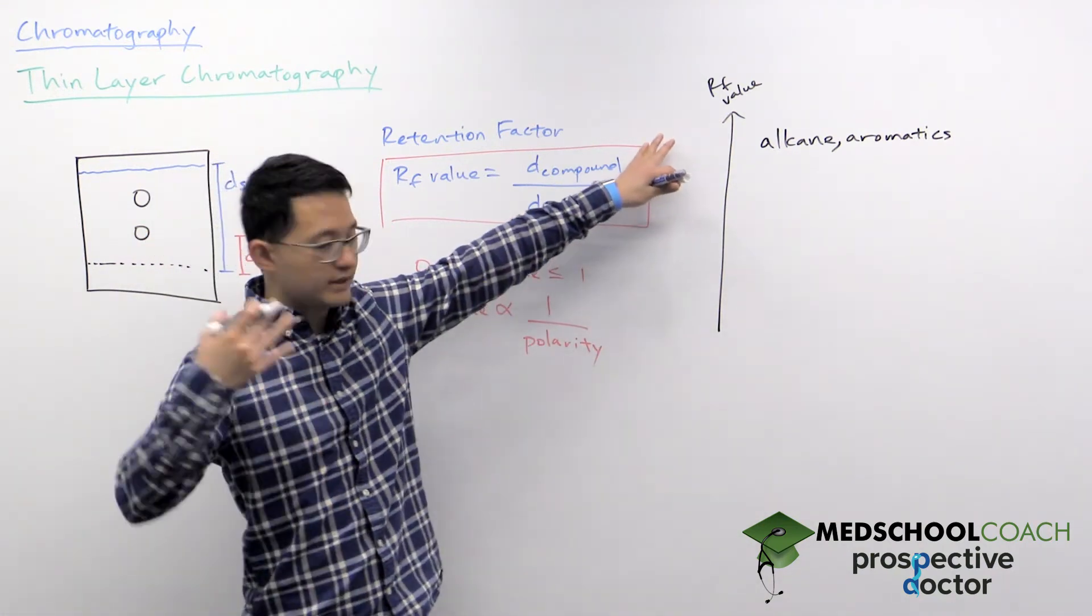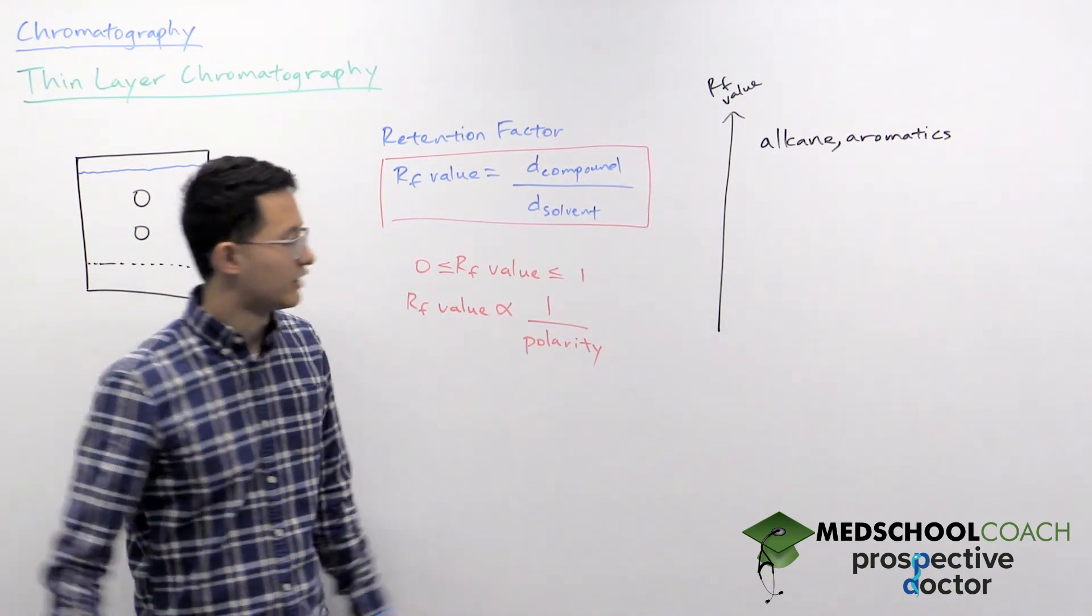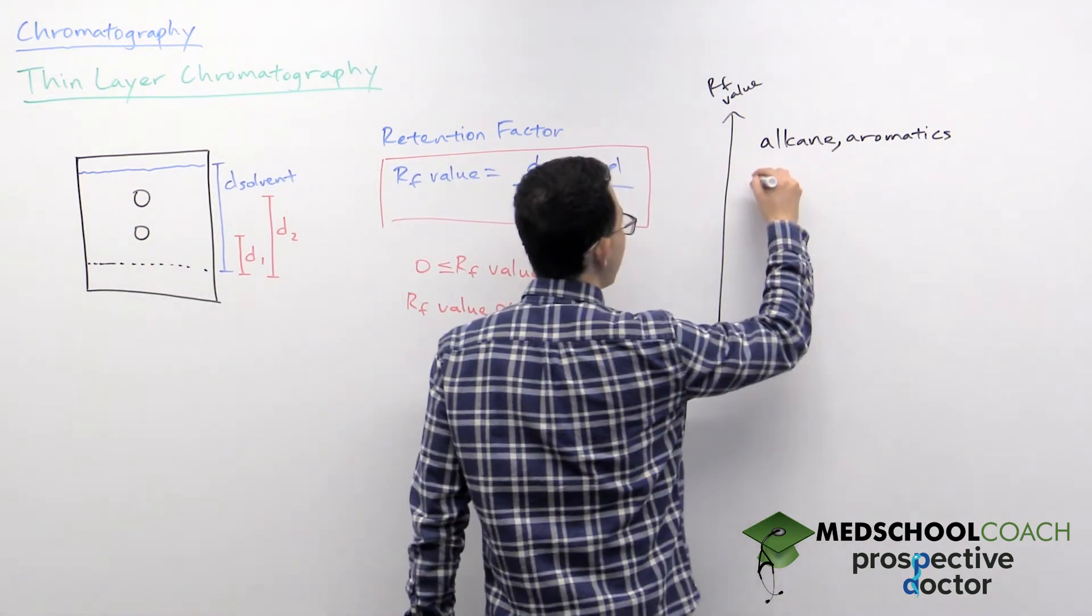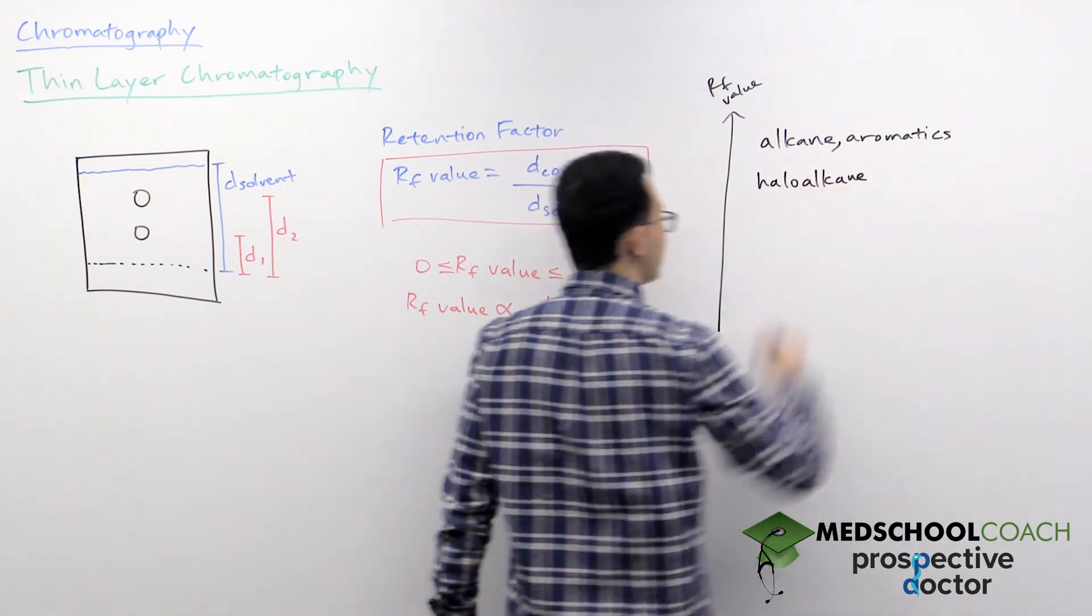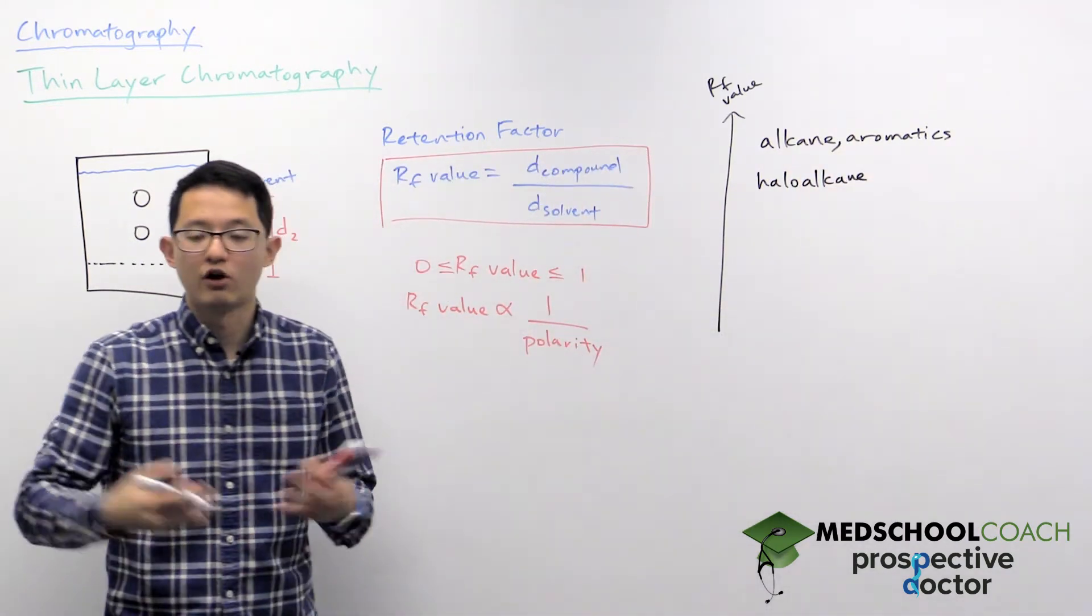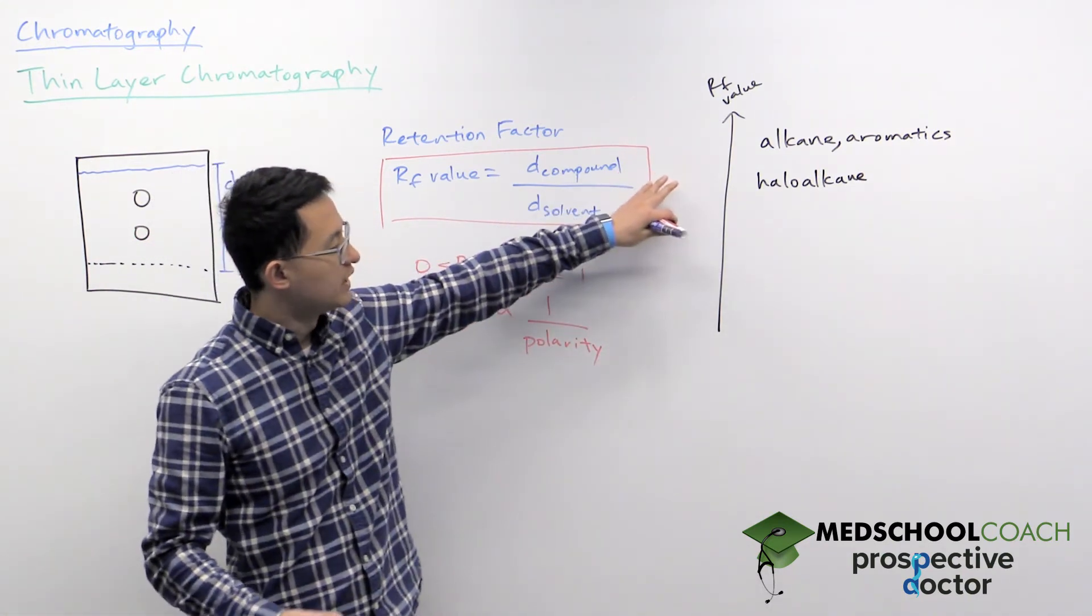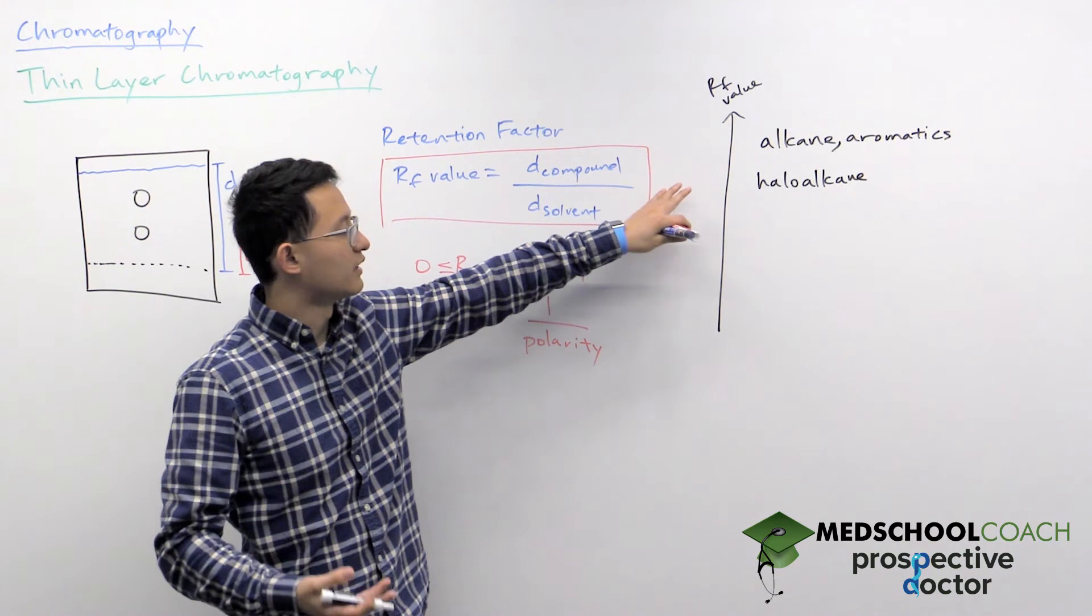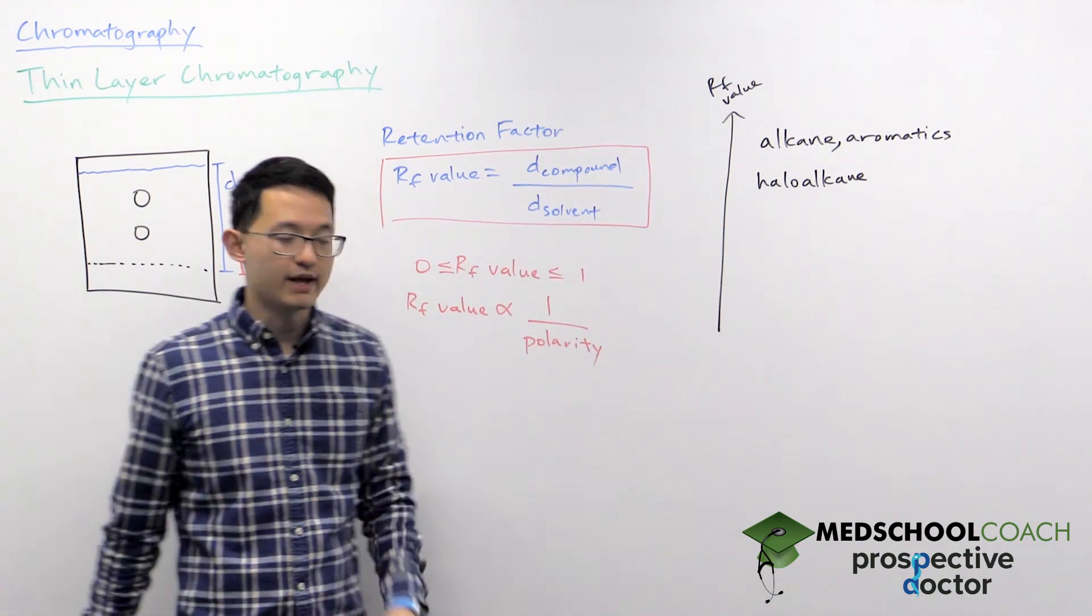So then you can look at compounds that are slightly more polar than alkanes and aromatics. So for instance, you can have haloalkanes. Haloalkanes are slightly polar but they're still largely hydrocarbons, so they will travel a good amount along the TLC plate but not as far as your alkanes and aromatics.